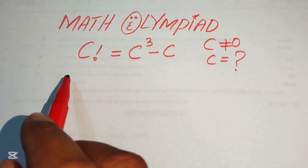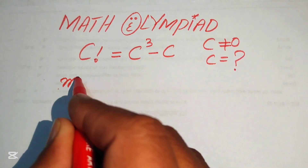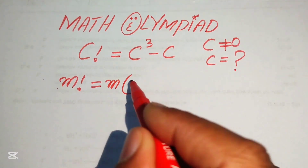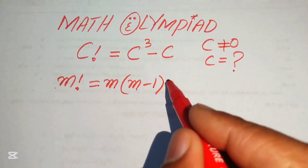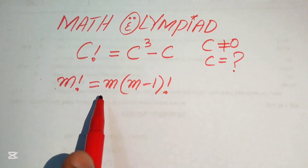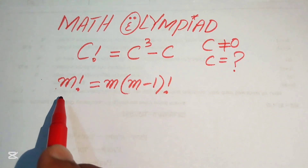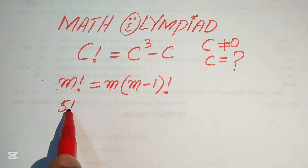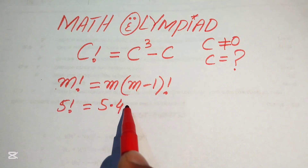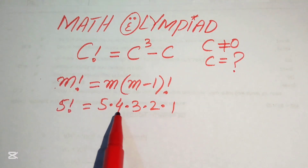The first step is to use the factorial formula: m factorial equals m times (m minus 1) factorial. So you break the factorial by decreasing each term by 1 and multiplying all numbers. For example, 5 factorial means 5 times 4 times 3 times 2 times 1.